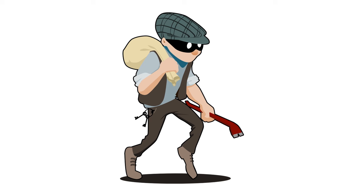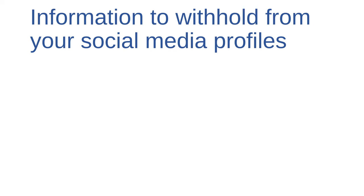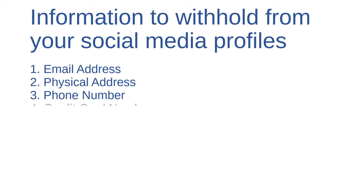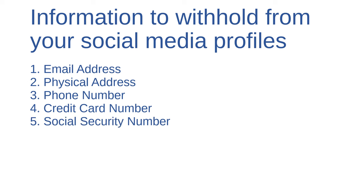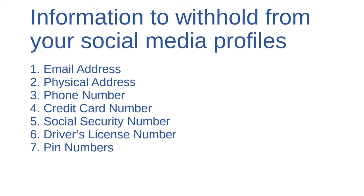Think about it — could a burglar use your updates, your photos, or your location check-ins to determine how you're vulnerable or when you'll be away from home? To protect your personal security, be conscious of how information you post on social media could be used against you. When building a social media profile, it's a good idea to leave off information you'd normally provide for an online purchase or tax return — things like your email address, physical address, phone number, credit card numbers, social security numbers, driver's license numbers, PIN numbers, or any other identification information.